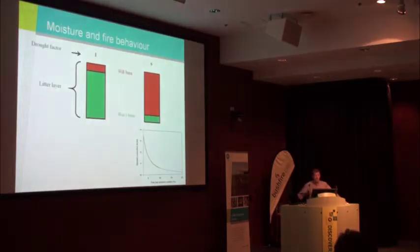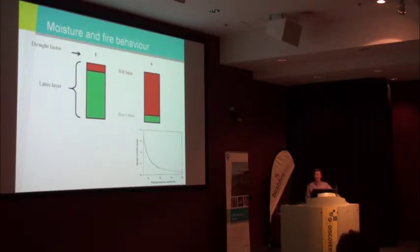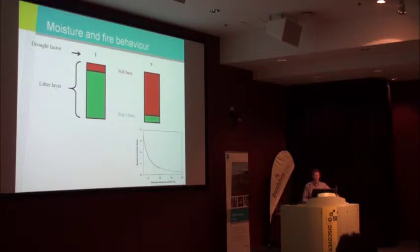In terms of terminology, fuel moisture refers to the water content of those fuels, whether it be the fine fuels on the surface or the deeper profile. By fuel availability, we're talking about how much of that fuel is available to burn. That's more commonly presented as drought factor, one of the components of MacArthur's Fire Danger Index.